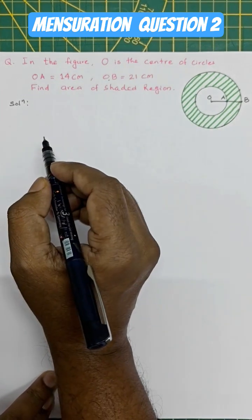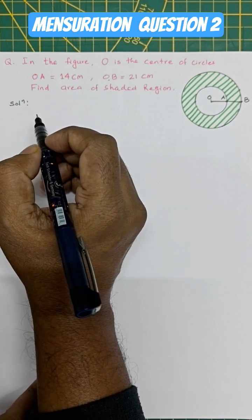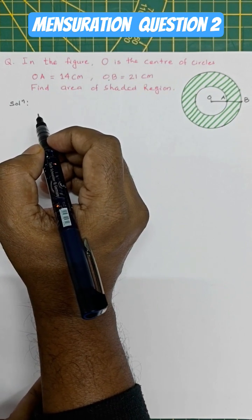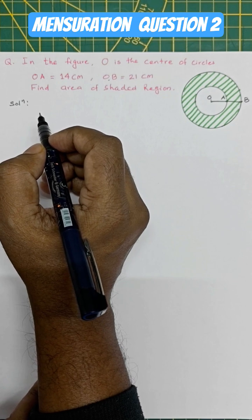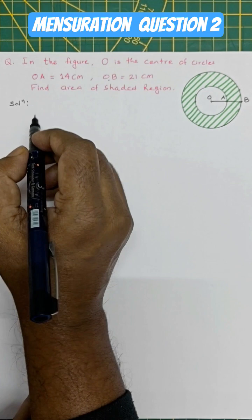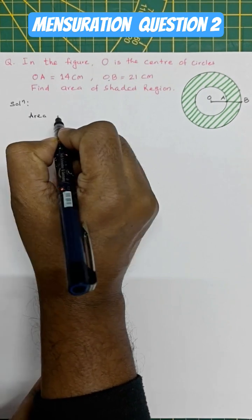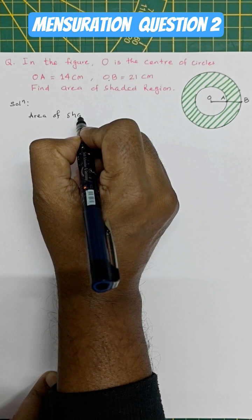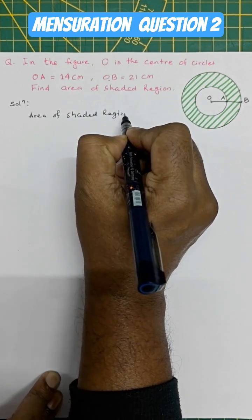So let's start. In this we can either remember the area of shaded region is pi into R square minus r square, or I'll give an easier solution. Let's write that area of shaded region...